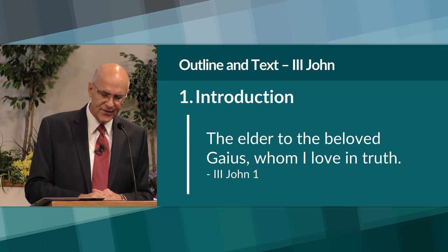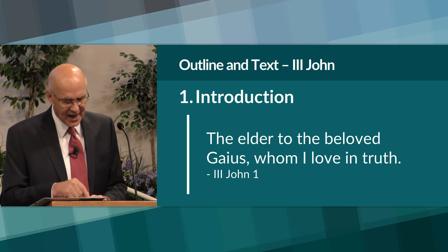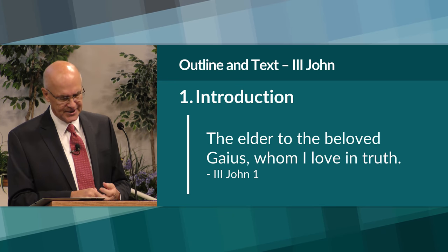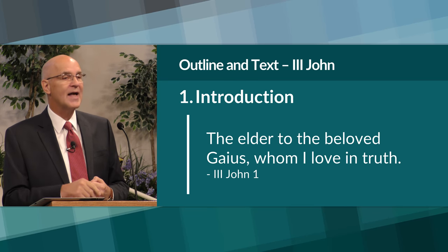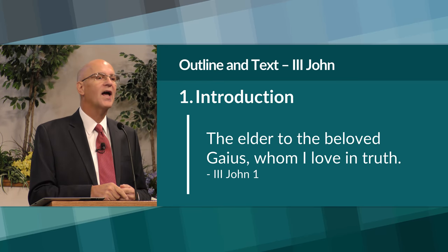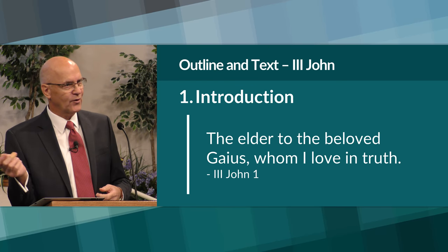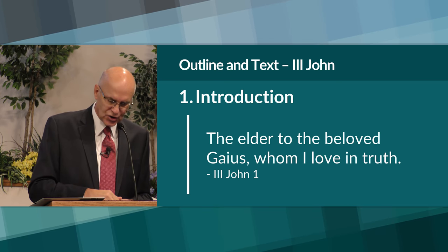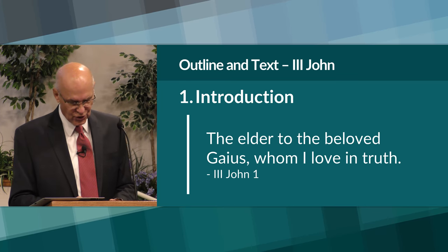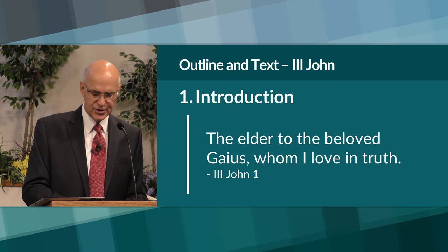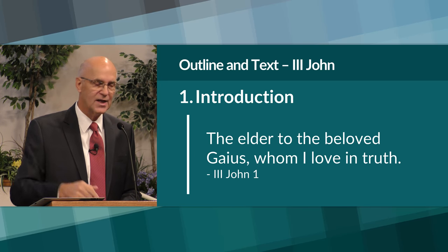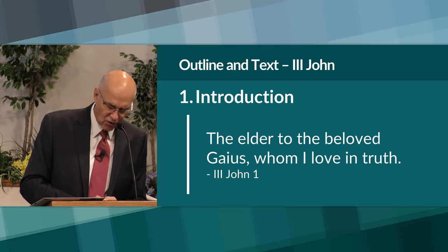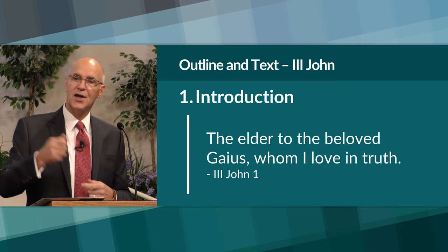His use of the term 'elder' suggests that he was known by this time as the last surviving apostle, advanced in years, filled with wisdom and the Spirit. Notice he doesn't say 'one of the elders' or 'an elder' — he says 'the elder.' Where church leaders were concerned, the reference was always to the elders plural; here he says 'the elder.' His connection to Gaius is that he loved him in connection with the truth.